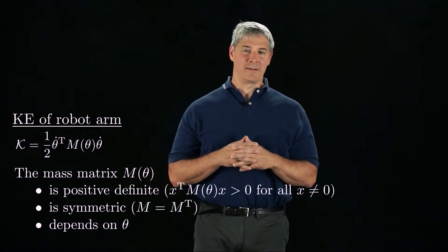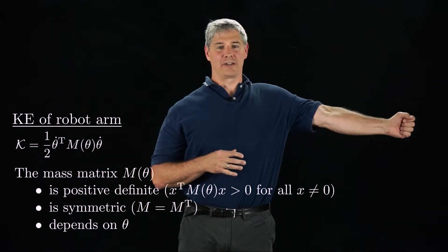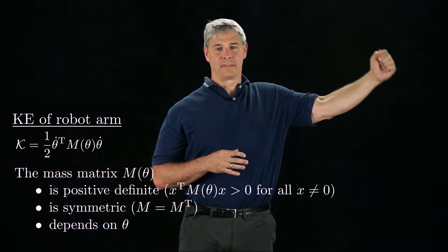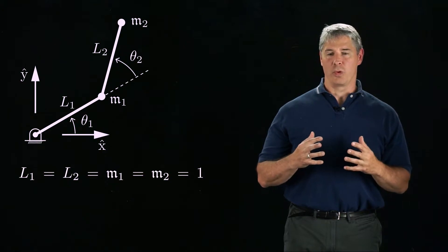The mass matrix depends on theta because the amount of inertia about each joint depends on whether the arm is outstretched or not. To see the variation in the mass matrix graphically, consider again the 2R robot arm, where the link lengths and masses are each one.